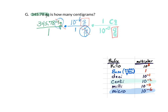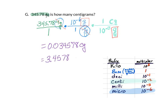In the calculator: 345.78 divided by 1, times 10 to the negative 6, divided by 1, times 1, divided by 10 to the negative 2, gives us 0.034578 centigrams, or in scientific notation, 3.4578 times 10 to the negative 2 centigrams.